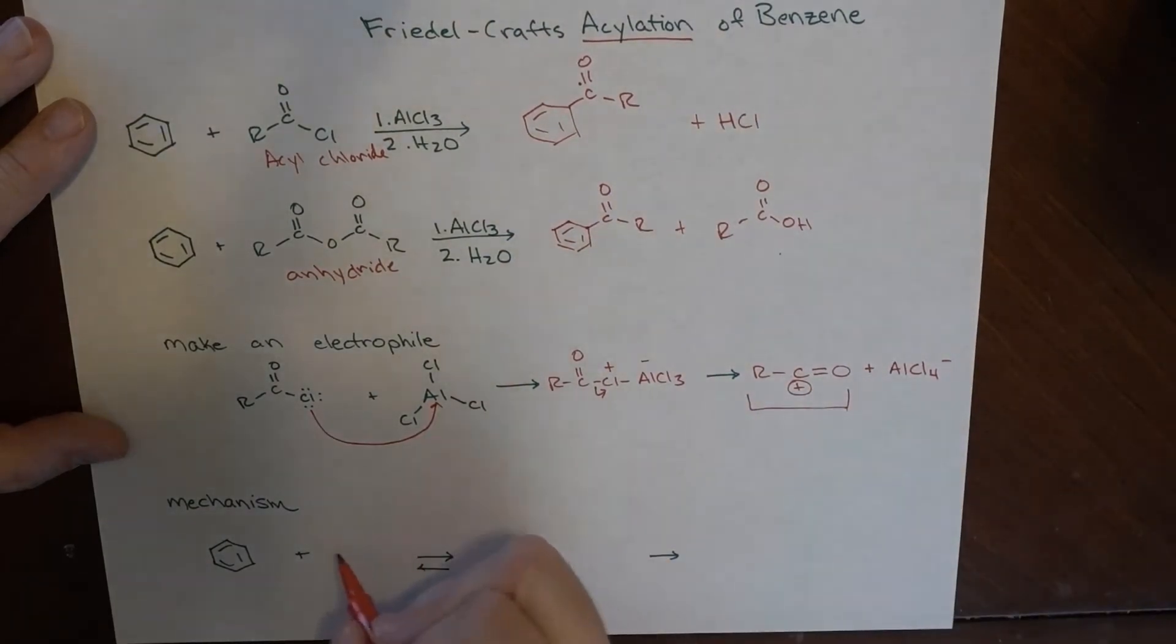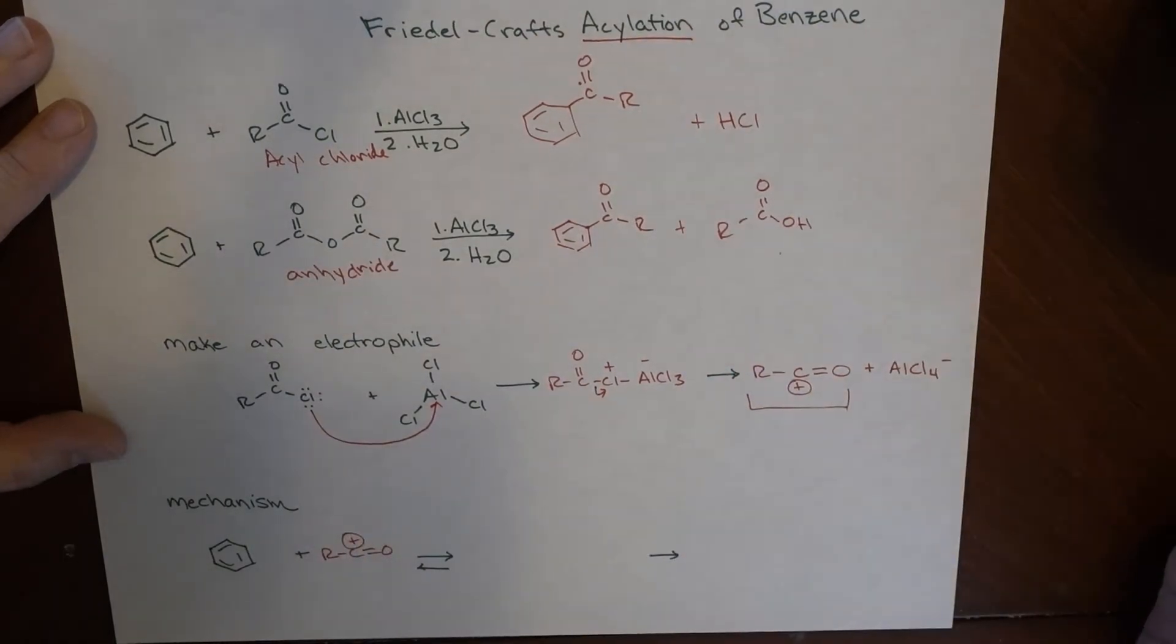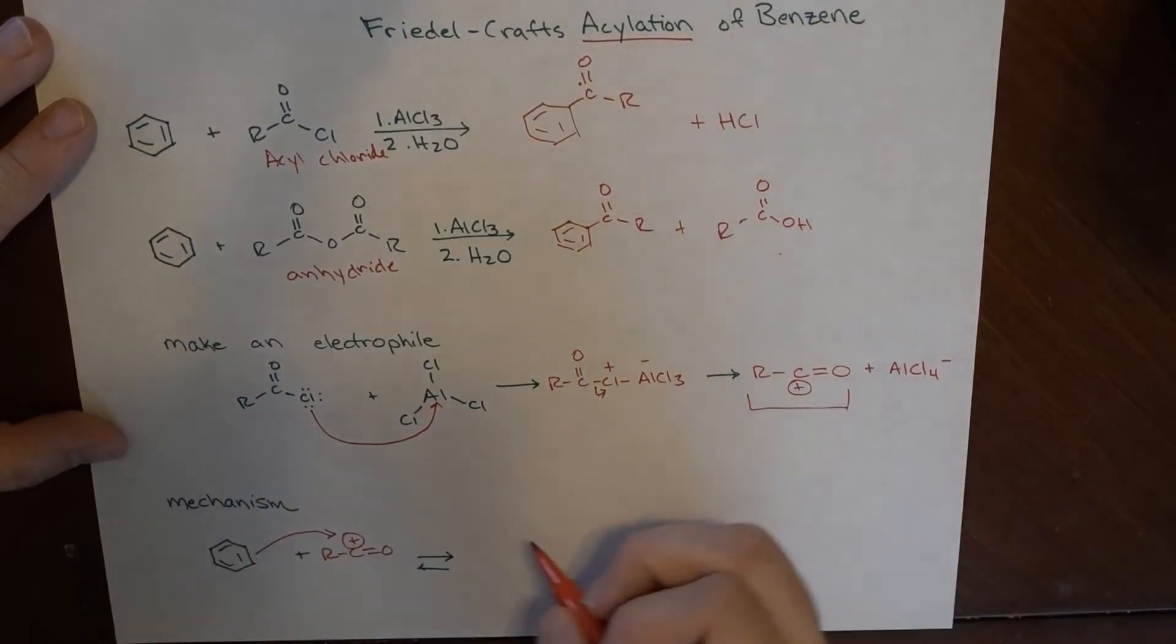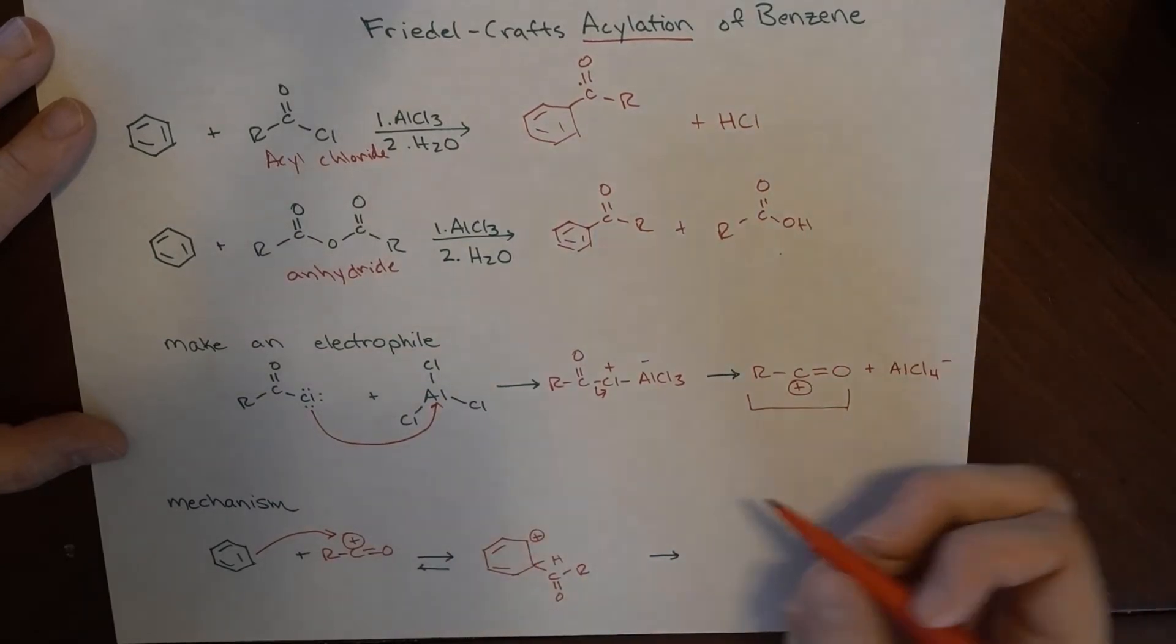And so if we have this R-C double bond O positively charged species here, then our electrons can grab on to that. So what we'll have there, keeping all the double bonds where I put them in the right places, we'll have a C double bond O to the R. There's still an H on there.